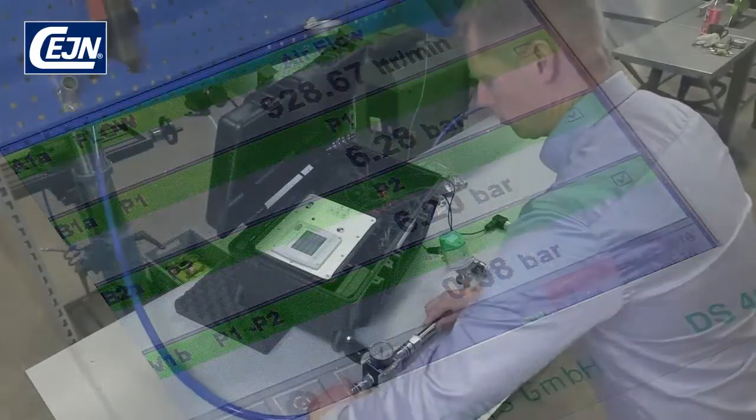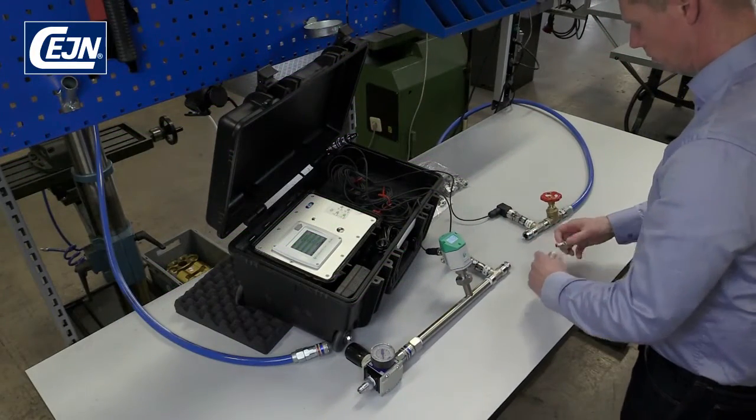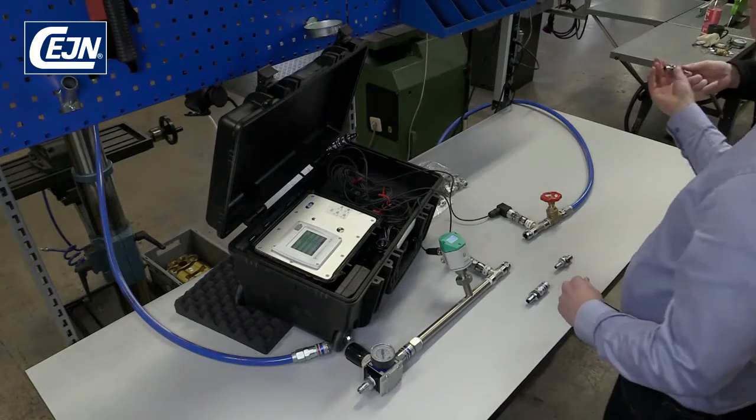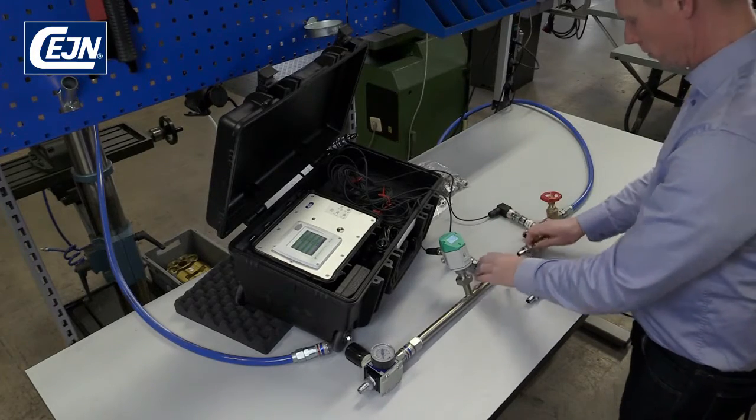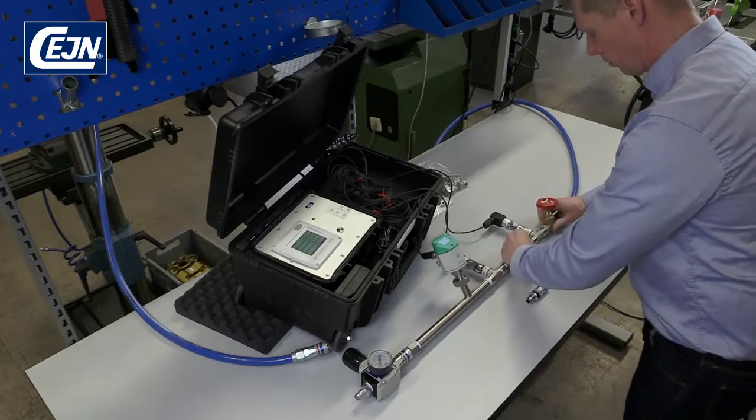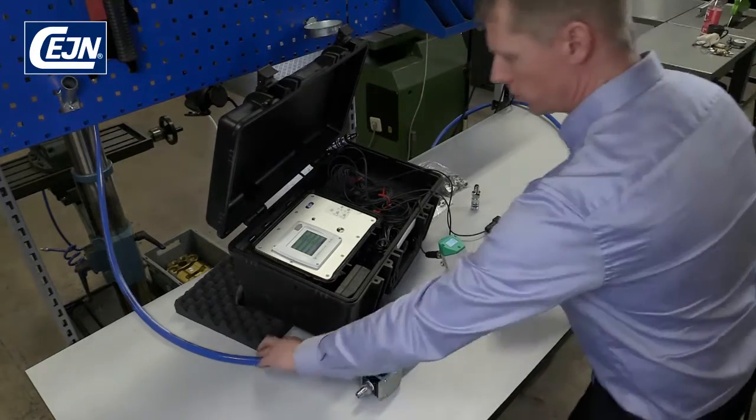Once you've completed the measurement, disconnect the hose and change the coupling. Here we have the competitor's coupling. We're connecting everything as before and not changing anything apart from the coupling. Check that everything is assembled correctly and, finally, connect the hose.